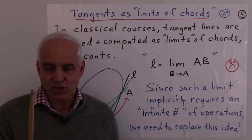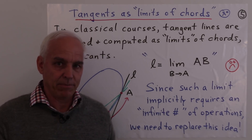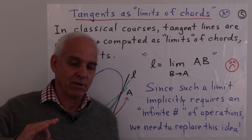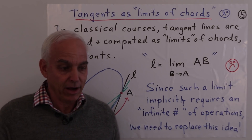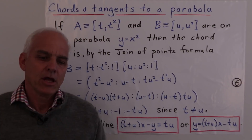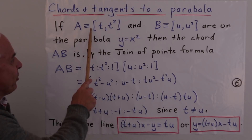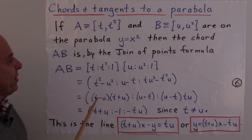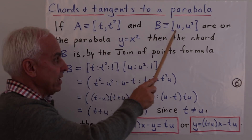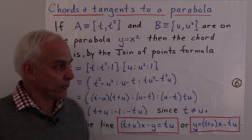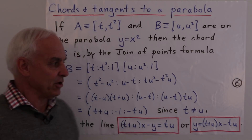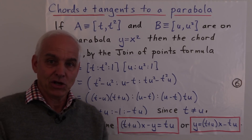We sidestep the limiting approach by exploiting the algebraic setup. We'll look at curves which are algebraically parametrizable and employ a beautiful trick to get at the tangent purely algebraically. To illustrate this, consider the simple example of the parabola y equals x squared, which is parametrizable by (t, t²). Here are two points on the parabola: A is (t, t²) and B is (u, u²), where t and u are some parameter values. We're going to compute the equation of the chord joining them using projective coordinates.